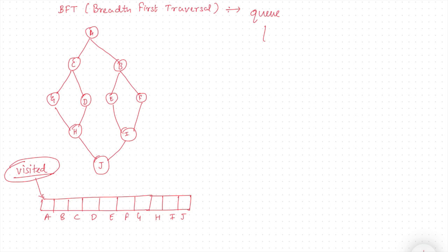The queue has a front pointer and a rear pointer. Exit is done from the front and insertion is done from the rear. That's how the queue works. First of all, I will make all the entries in the visited array.